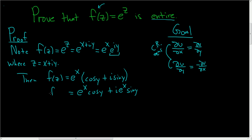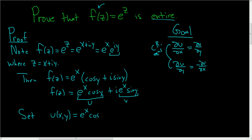So now we've written our complex valued function in a very nice way. This is going to be the real part — we're going to call this u. And this will be the imaginary part — we're going to call this v. So set u(x, y) = e^x cos y, and v(x, y) = e^x sin y.